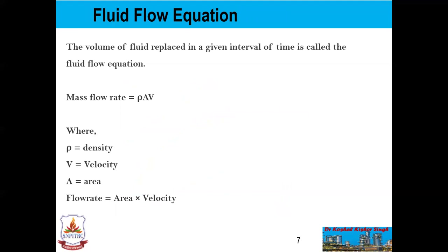Now we will see the fluid flow equation. The volume of fluid displaced in a given interval of time is captured by the fluid flow equation. The mass flow rate is equal to ρAV, where ρ is the density, V is the velocity, and A is the area. So flow rate equals area multiplied by velocity.